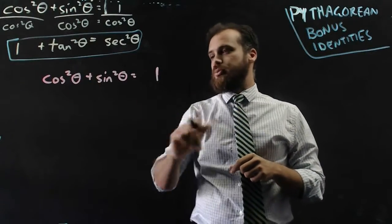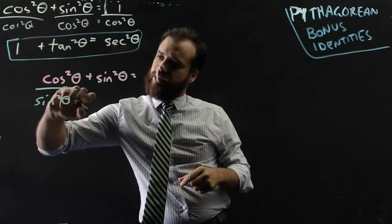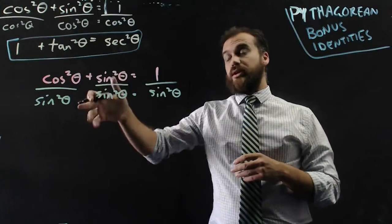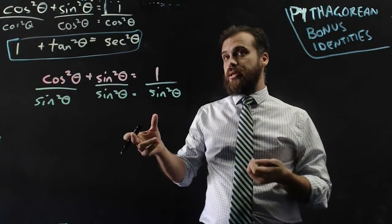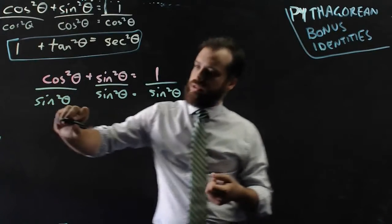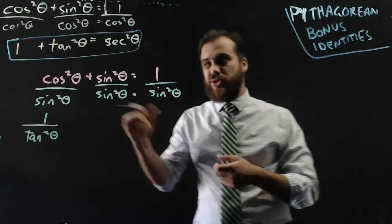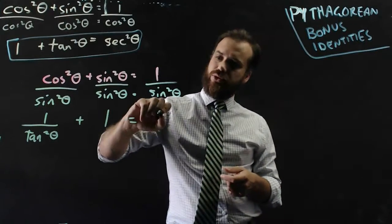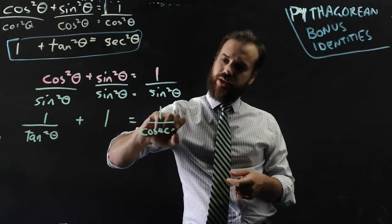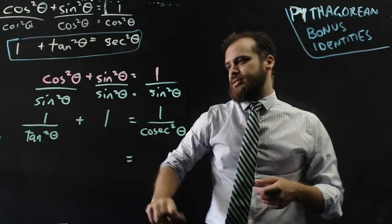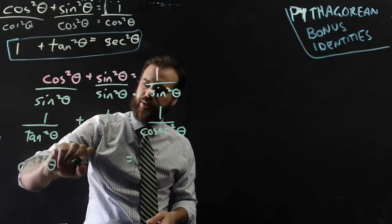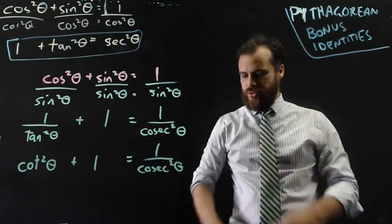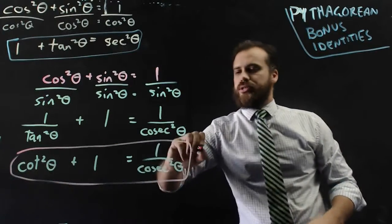Bonus identity: cos squared theta plus sin squared theta equals 1, dividing everything by sin squared theta. Cos squared theta over sin squared theta is not tan squared theta — it needs to be upside down, so it's actually cot squared theta. Plus 1 equals 1 over sin squared theta, which is csc squared theta. So our second bonus identity is cot squared theta plus 1 equals csc squared theta. There are our two Pythagorean bonus identities.